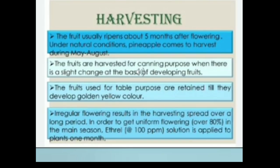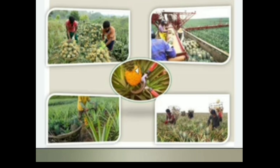Harvesting: The fruit usually ripens about 5 months after flowering under natural conditions. Pineapple comes to harvest during May to August. Fruits harvested for canning are picked when there is a slight colour change at the base of the developing fruit. Fruits used for table purpose are retained till they develop golden yellow colour. In order to get uniform flowering over 80% in the main season, ethephon at the rate of 100 ppm solution is applied to plants 1 month before the intended flowering.